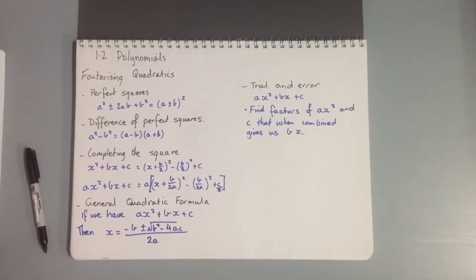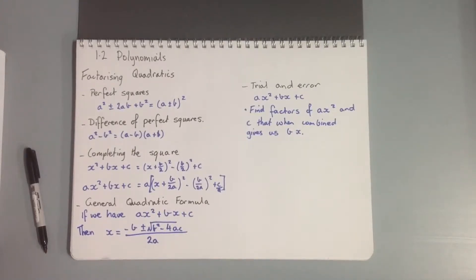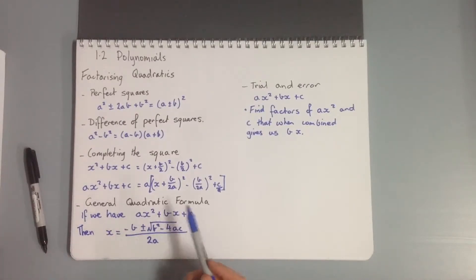I'm putting it in here now but we'll revisit the general quadratic formula a little bit later. That's: if we have ax² + bx + c then x equals negative b plus or minus the square root of b² - 4ac, over 2a. That's more about solving for x rather than factorizing, but most of the time we factorize to then solve anyway.